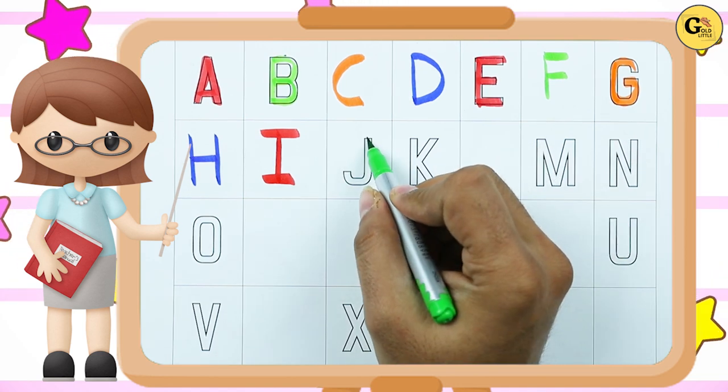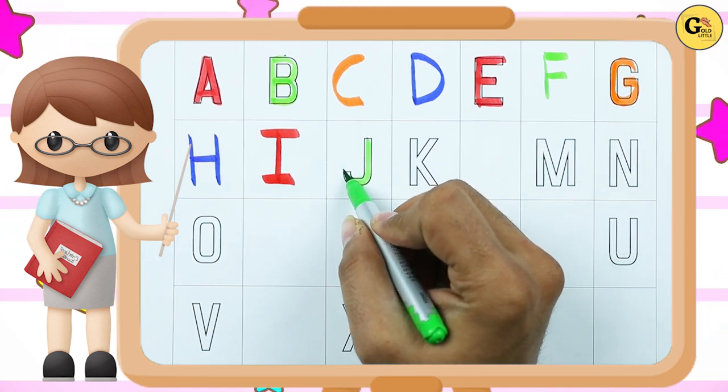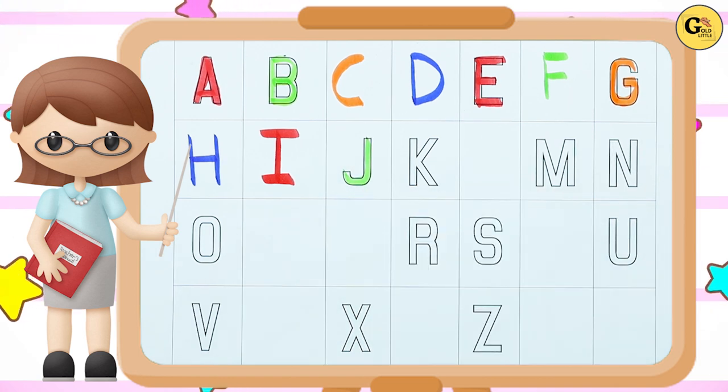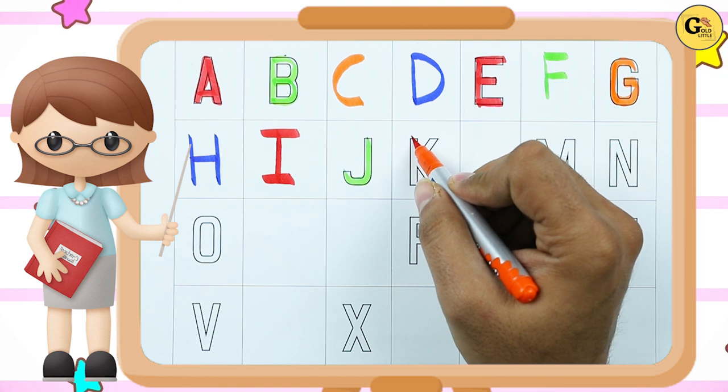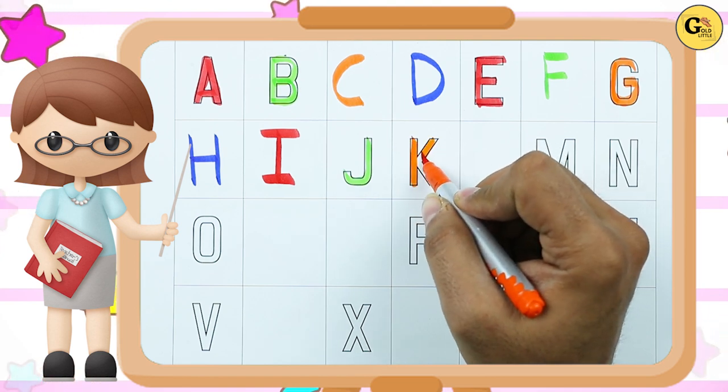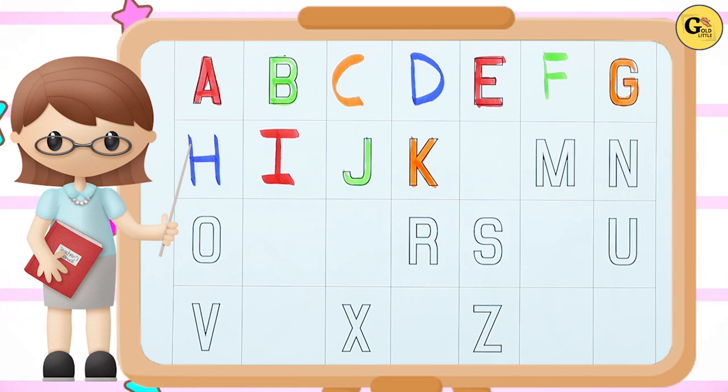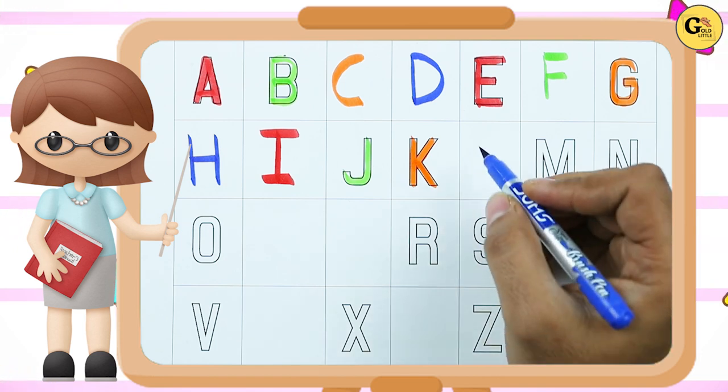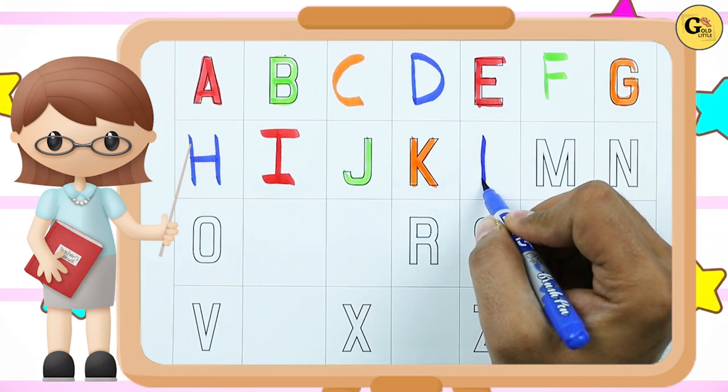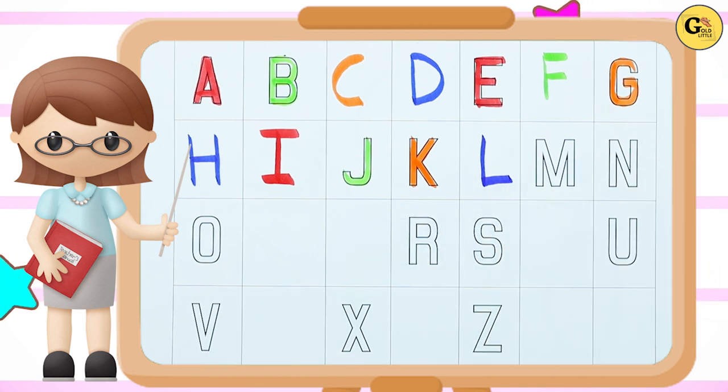And J. J for jag. J with green color. J for jag. K. K for kite with belly color. K for kite. So what next? Tell me. L. It's very good. L for lion.